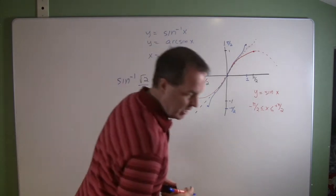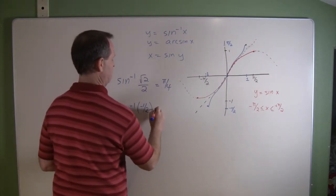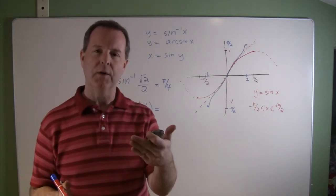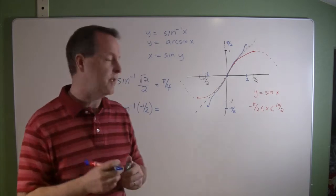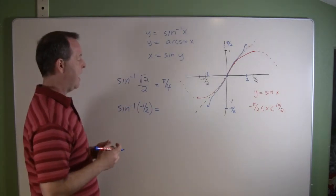The inverse sine of minus 1 over 2. So again, what we're looking at is what's the angle that produces a sine of negative 1 half? That's what the inverse is asking.